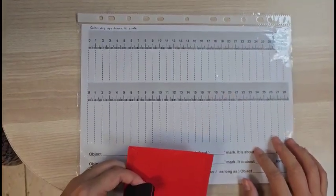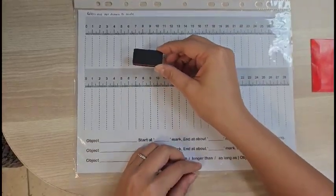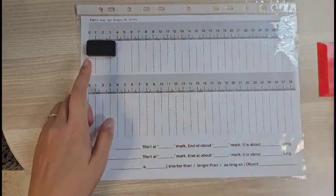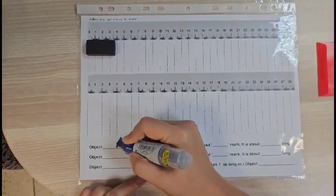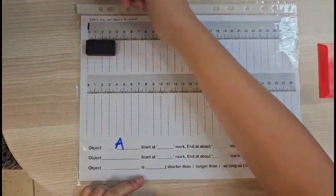So this template is what you have received. I'm going to begin with the eraser. So for the eraser, which is object A, let me write that down here. For object A, I'm going to choose to start at 0 cm.